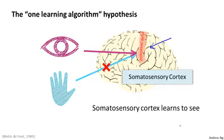To a surprisingly large extent, it seems as if we can plug in almost any sensor to almost any part of the brain, and so within reason, the brain will learn to deal with it.